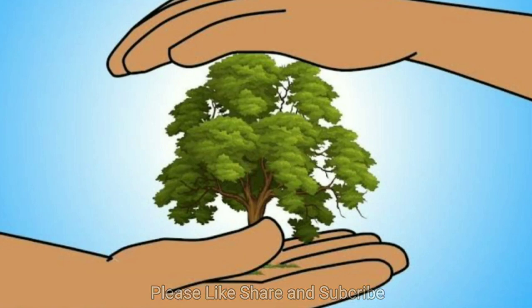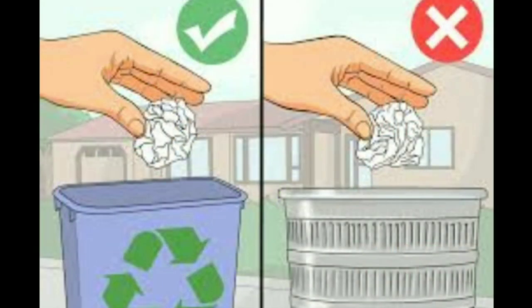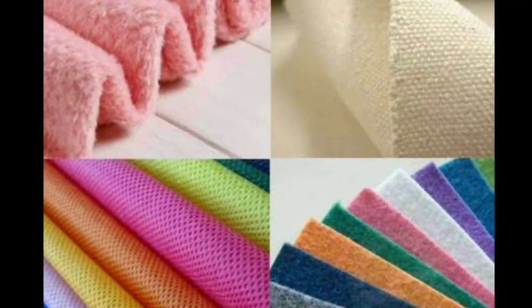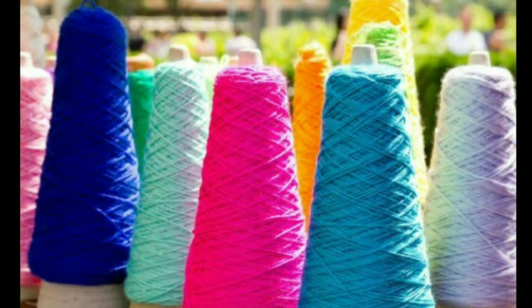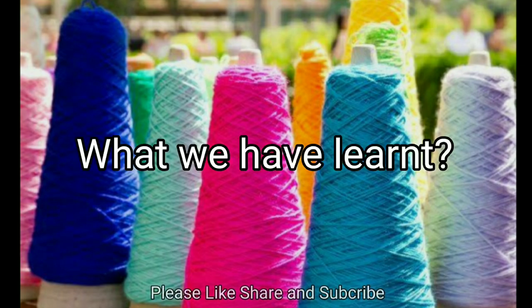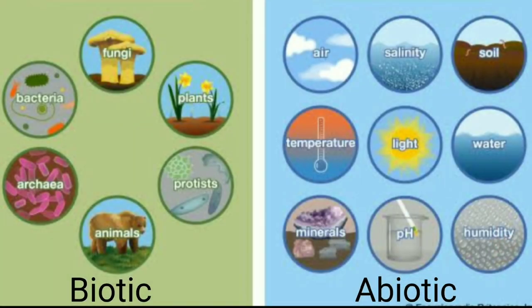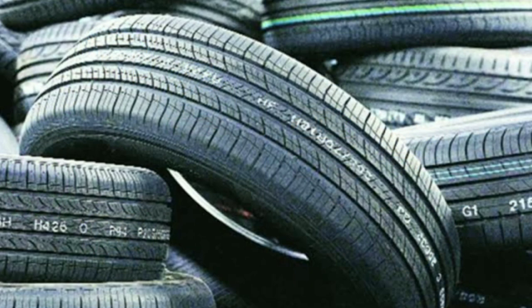Always remember: save trees to save nature; save paper to save trees. Use paper properly and economically — make full use of it and recycle used paper. Although there are some disadvantages in using synthetic fibers, they can be useful if used in the proper way. They reduce the load on the use of natural resources. We use two types of materials — natural and man-made. Natural materials may be biotic or abiotic. Biotic materials are either of plant or animal origin. Rubber, paper, and synthetic fibers are important man-made materials in our daily use.